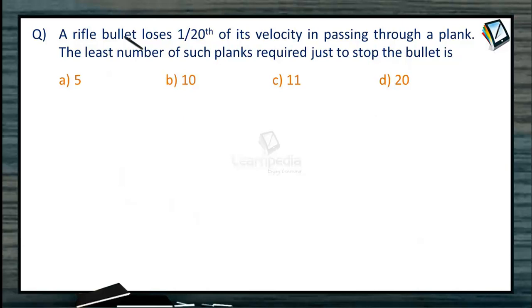Question: A rifle bullet loses 1/20th of its velocity in passing through a plank. The least number of such planks required just to stop the bullet is?